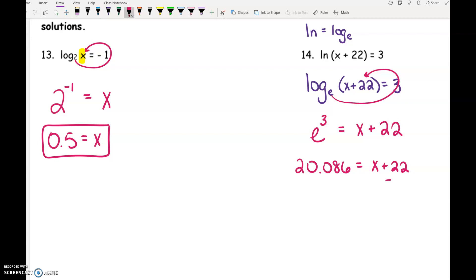And then to finish solving this, we subtract 22 on both sides. Negative 1.914 equals x. And I would take a moment. Negative 1.9 is pretty close to negative 2, right? Negative 2 plus 22, that's still going to be positive. So we're fine. That answer is fine.